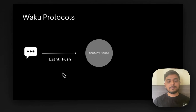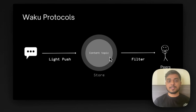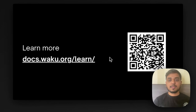Brushing it up: we use Lightpush for sending a message into a content topic, Filter for retrieving or subscribing to messages from a content topic, and Store for providing temporary storage. Keep in mind that Store should not be exploited for long-term storage — this is just for temporary storage and Vaku does not provide any reliability on the persistence of the messages. If you wish to know more about Vaku, make sure to check out the documentation at docs.vaku.org. We also have a learn section and a research section.